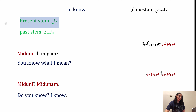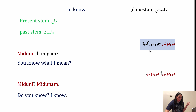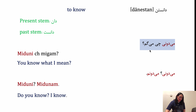Donestan — to know. The present stem is dun and the past stem is dunest. Example: Miduni chi migam? — Do you know what I mean? You use this sentence when you want to ask someone if they understand you. After explaining a lot about something, you say Miduni chi migam? It means: Can you understand me? Can you understand what I mean?